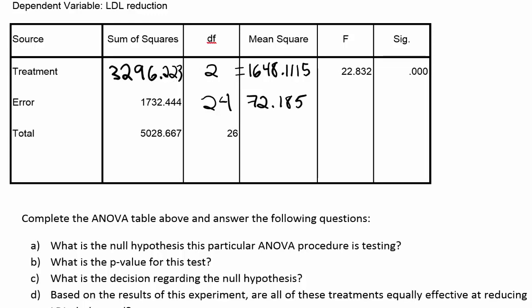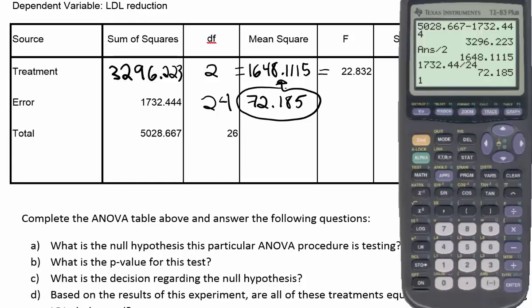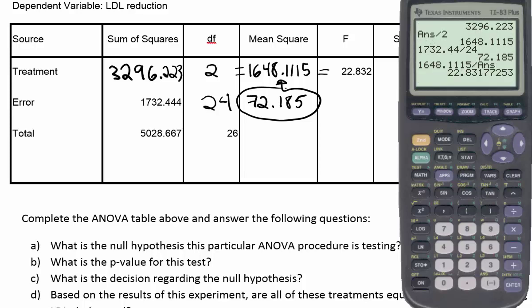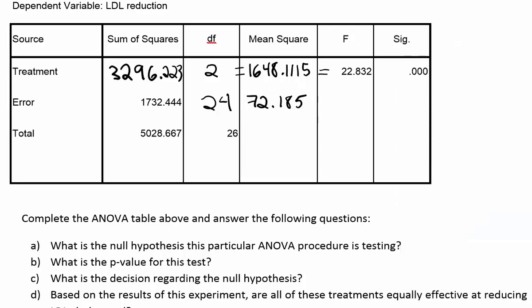That's the mean square for error. We can verify our work: 1,648.1115 divided by 72.185 should give us the F-statistic of 22.832, and it does. So we've done it correctly and the ANOVA table is complete.